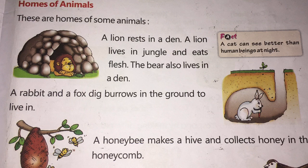There is a box of facts: a cat can see better than human beings at night — a cat has very sharp eyes and can see better at night. A rabbit and a fox dig a burrow in the ground to live in. Can you see the picture? There is a rabbit inside the ground. A burrow is like a hole inside the ground; they dig in, make a burrow and stay inside. Rabbit and fox stay inside the burrow.